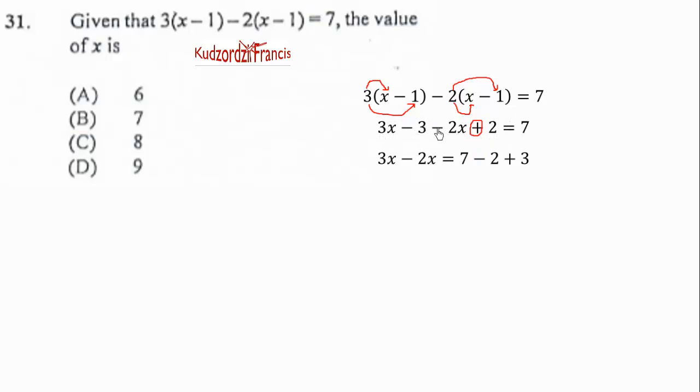Now let's regroup the terms. 3x - 2x. Then we have 7 here, 2 subtract, and 3 add. If you do that, you get 7 - 2 which is 5. 5 + 3 is 8. Therefore x is equal to 8.